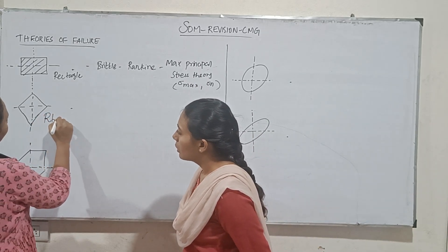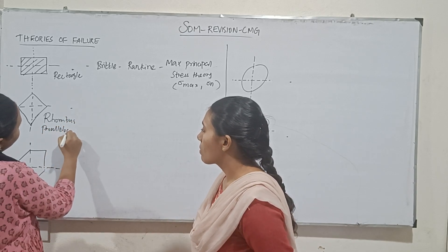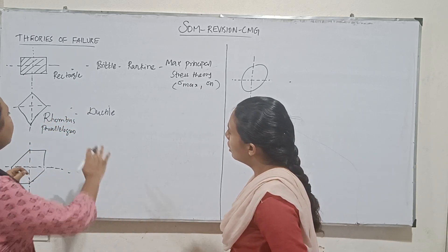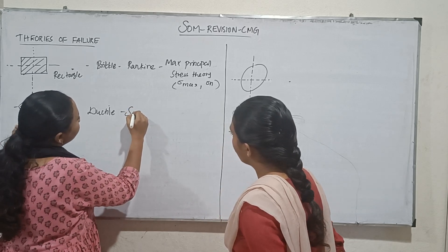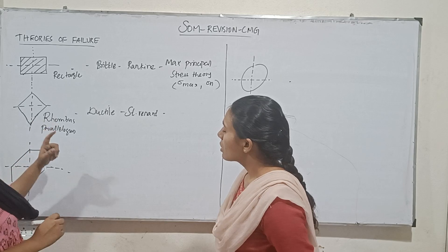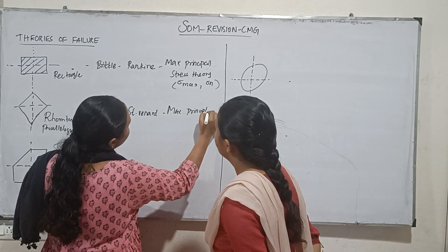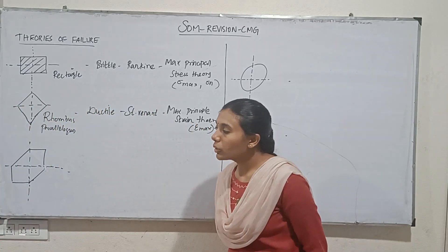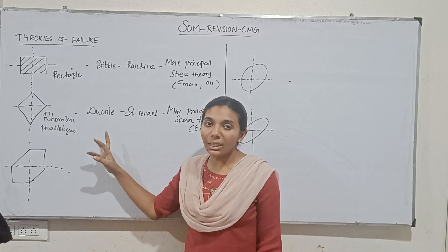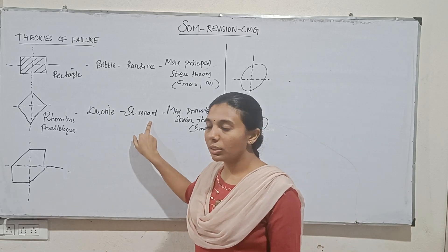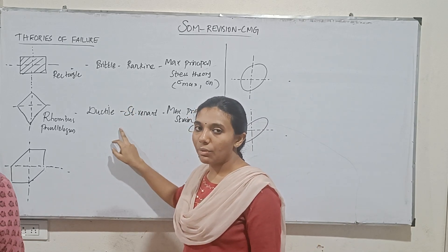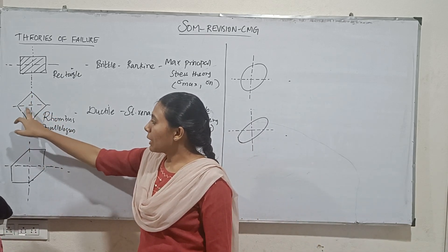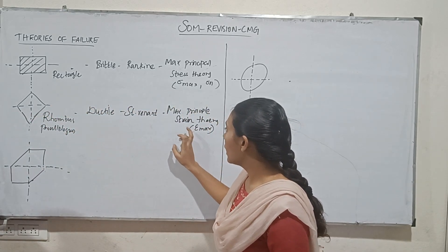Next one is — wrong or parallel wrong? So this is what material is suitable? It is most suitable for brittle and ductile, but most of the time ductile. This theory is the Maximum Principal Strain Theory. So it is related to the batch — the strain theory.